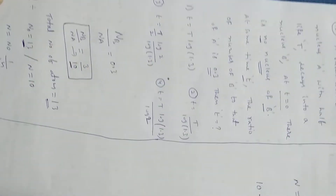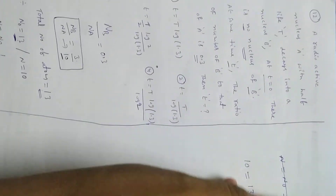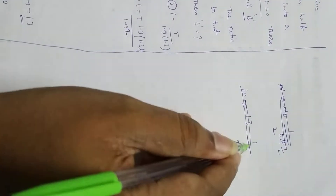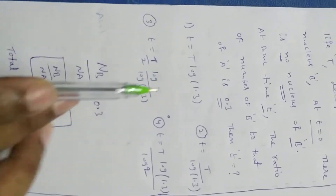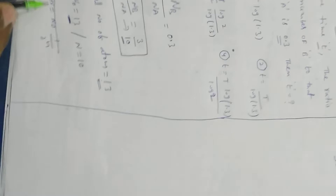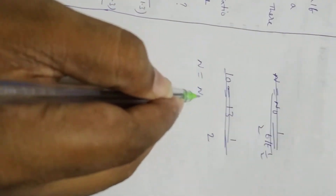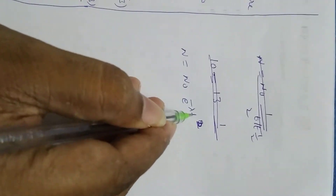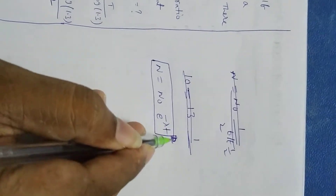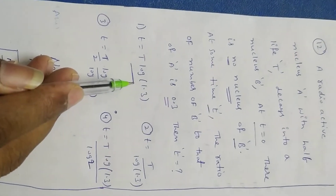After some time, one minute. Here in the options, to check the options - logs is there. So that's why here the formula is written exponentially: n equal to n naught e power minus lambda t, because all the options have logarithm. So I write exponentially.